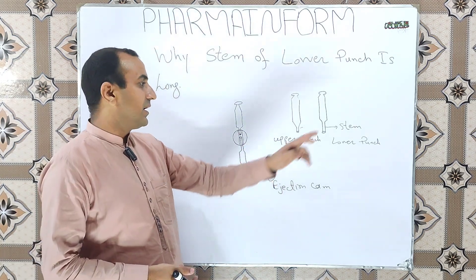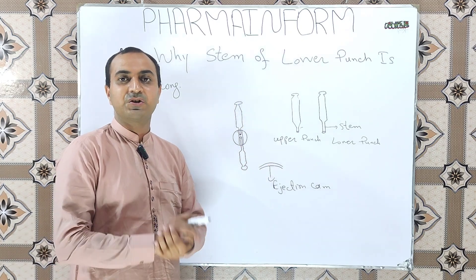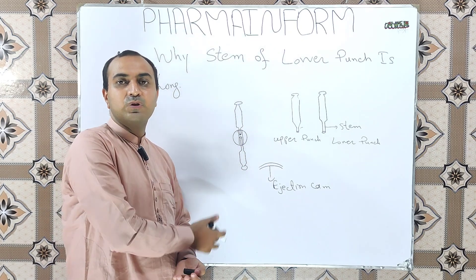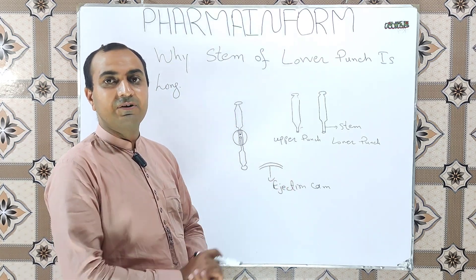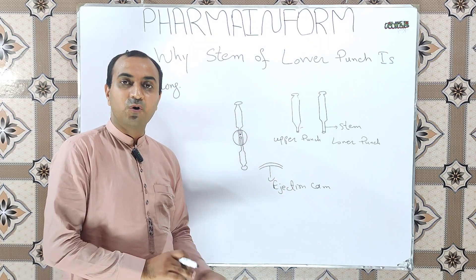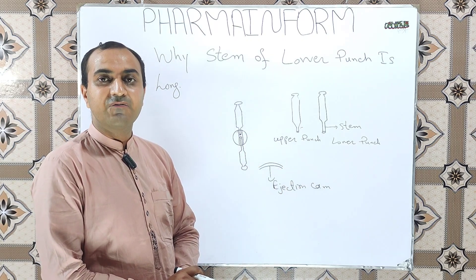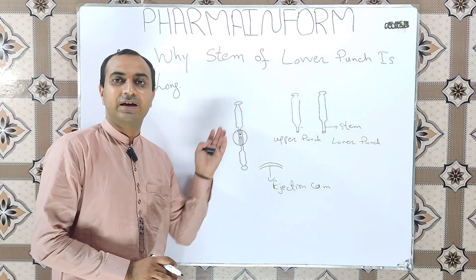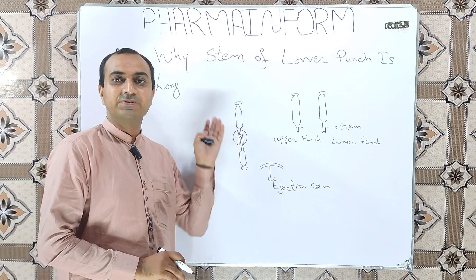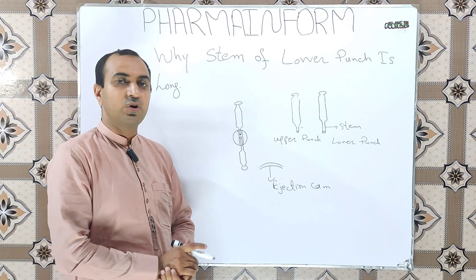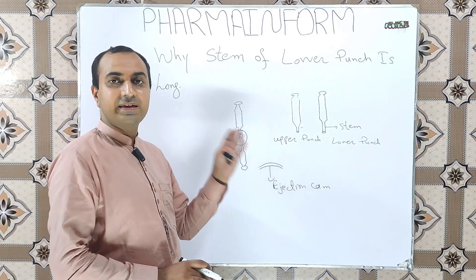The fact is that the upper punch stem is only to counter the pressure which is applied through the lower punch when tablet is compressed in the die cavity. The role of lower punch is to eject the tablet from the die cavity. When the tablet is compressed in the die cavity, the upper punch is removed out of the die cavity from the punch pulling cam, and only the tip of lower punch remains inside the die cavity.